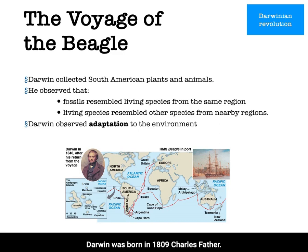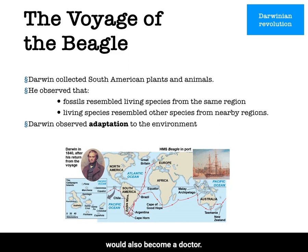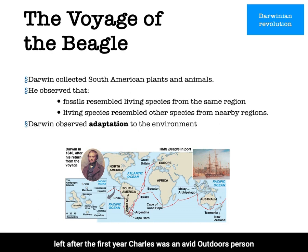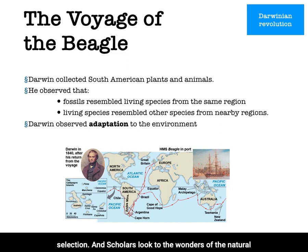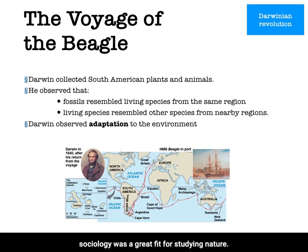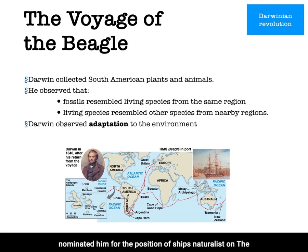Darwin was born in 1809. His father Robert was an English doctor who was determined that Charles would also become a doctor. He sent Charles off to Scotland to study medicine, but Charles left after the first year. Charles was an avid outdoors person who loved collecting and trading rocks and insects, and given that love of nature, Robert agreed that Charles would be allowed to study theology. Before the discovery of evolution by natural selection, scholars looked to the wonders of the natural world in the effort to understand the mind of the creator, so theology was a great fit for studying nature. Darwin so impressed his professors at Cambridge that they nominated him for the position of ship's naturalist on the voyage of the Beagle.